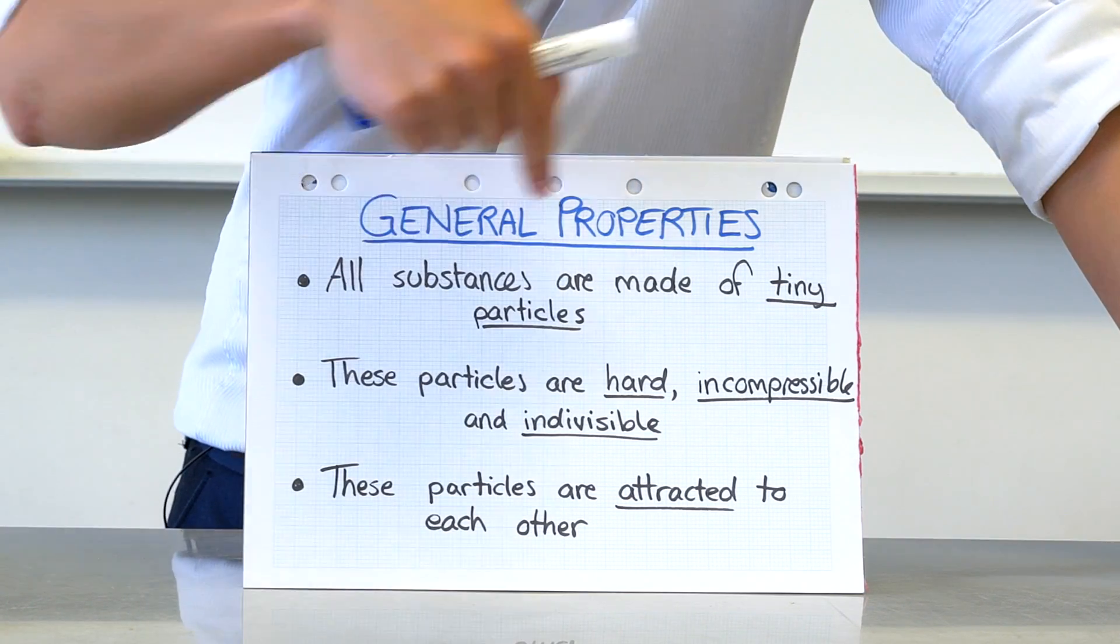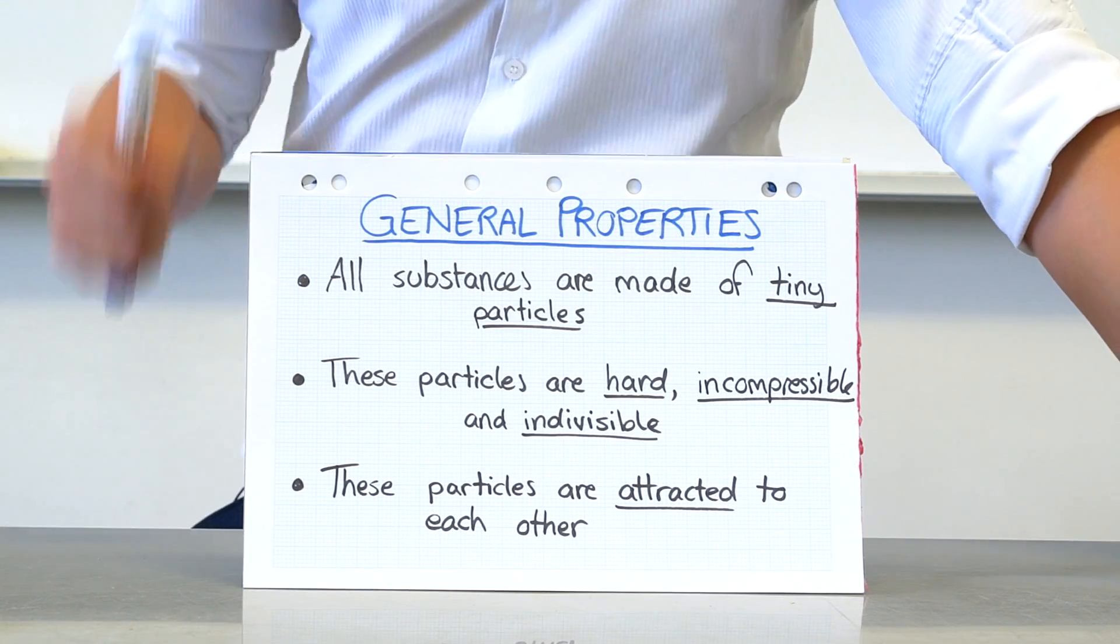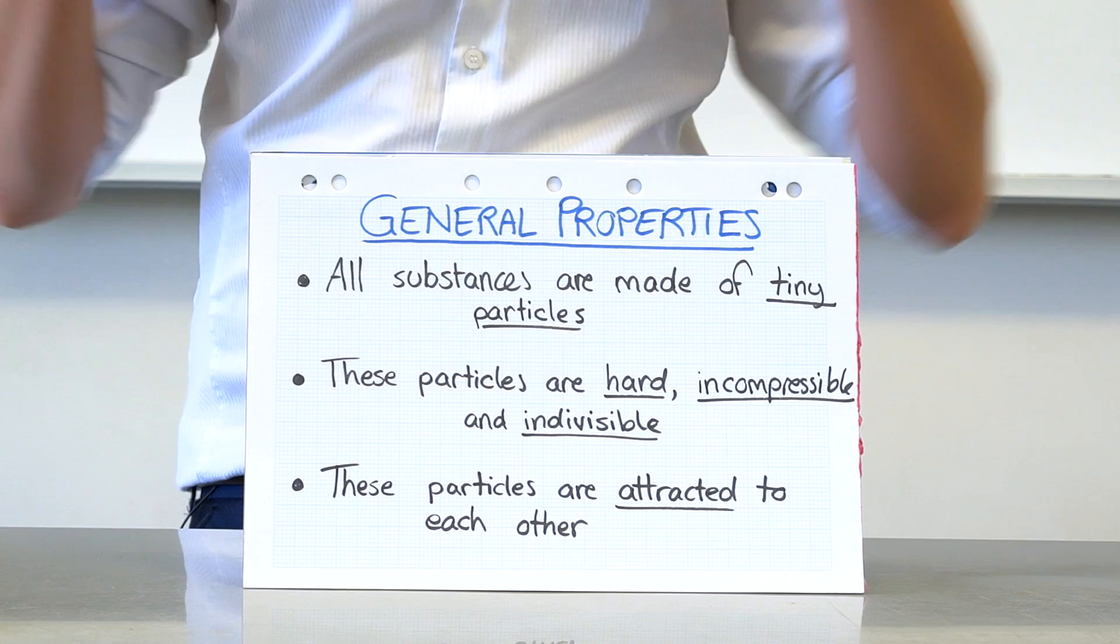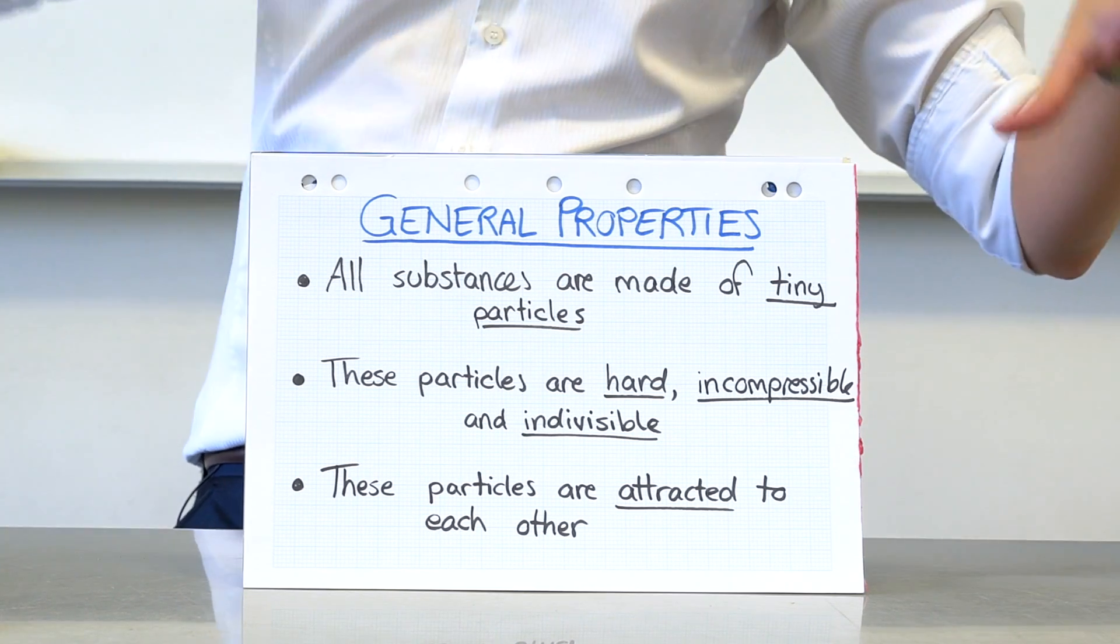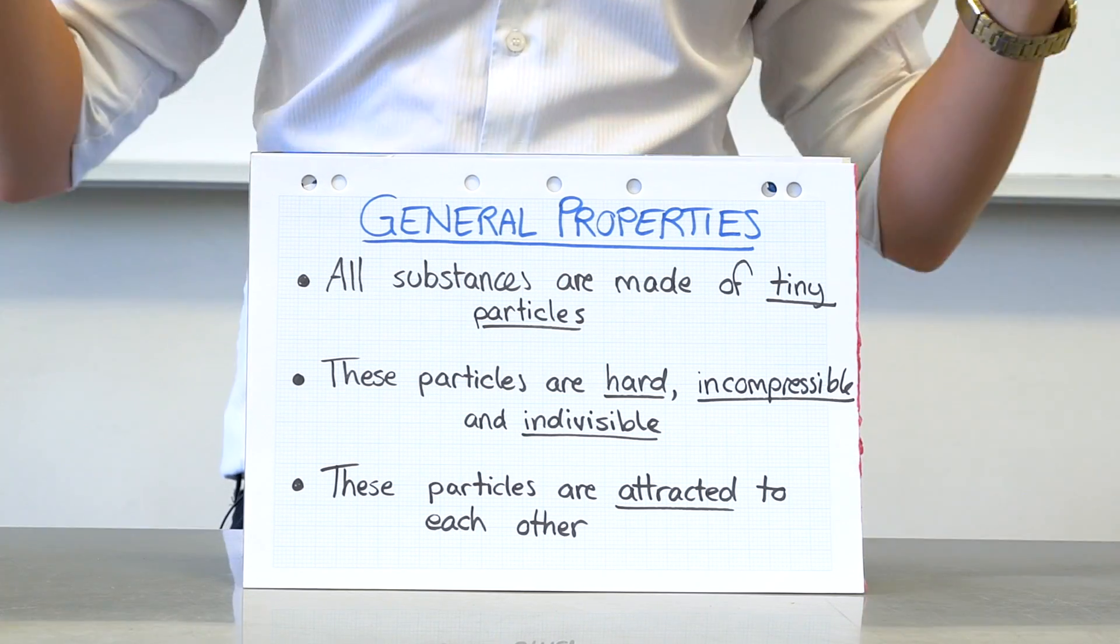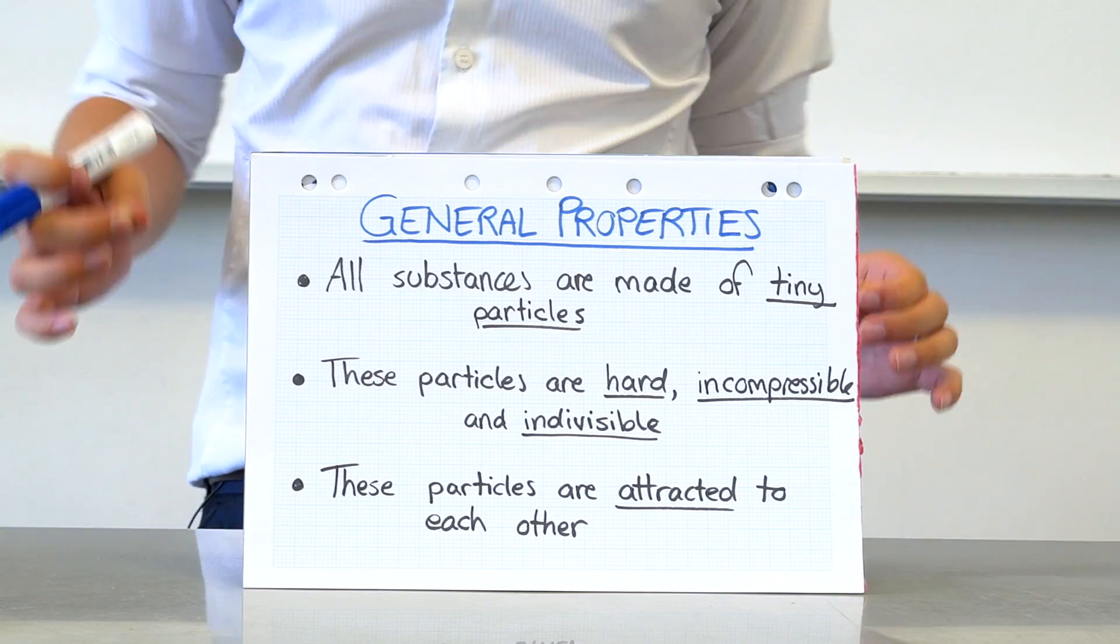General properties. All substances are made of tiny particles. Everything. Your shirt, your skin, your brain, the bench, the birds, the trees, everything is made of tiny particles. That's what the theory is stating here.